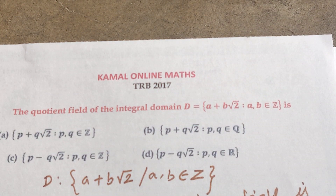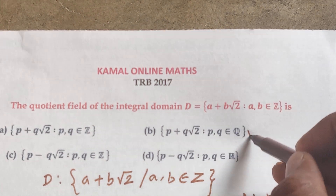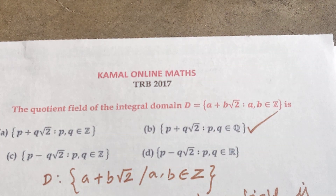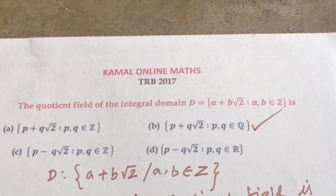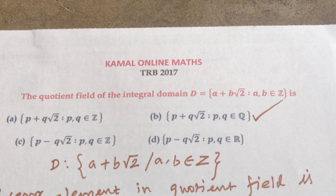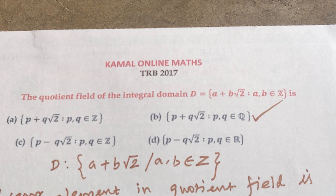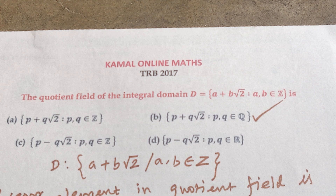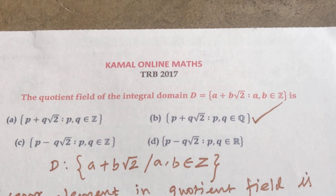So the answer is P plus Q root 2, where P and Q are elements of ℚ, the rationals. Real numbers are not the answer since that would include irrational numbers. Integers alone are not sufficient either. The correct option is P plus Q root 2 where P and Q are rational numbers.